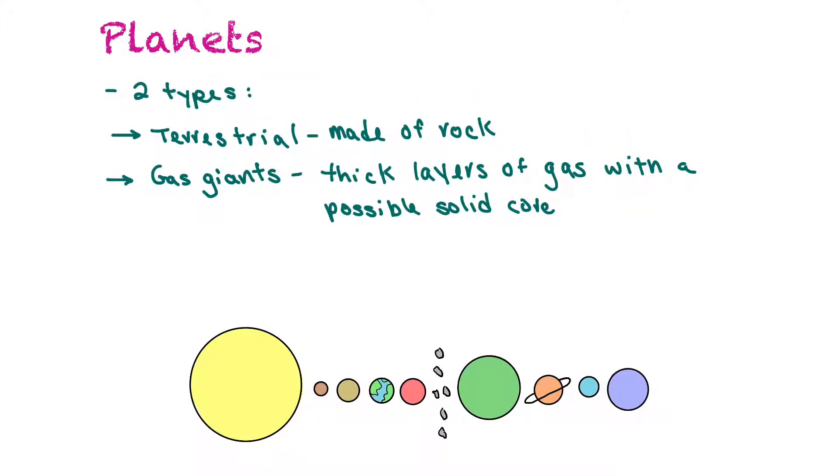There are two different types of planets. The first type are terrestrial planets, and those planets are made of rock. Gas giants have thick layers of gas with a possible solid core.